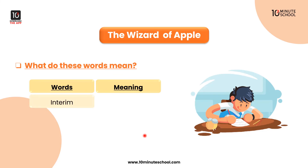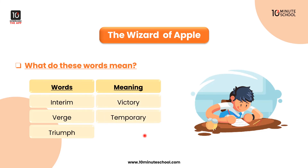Let's look at vocabulary words from the passage. The first word is 'Interim,' which means Temporary. The second word is 'Verge,' which means Border. The third word is 'Triumph,' which means Victory.